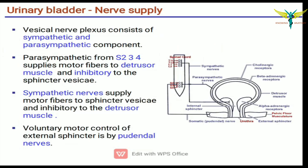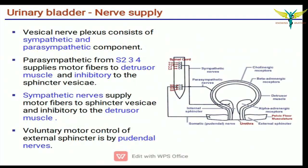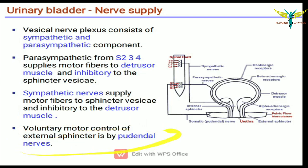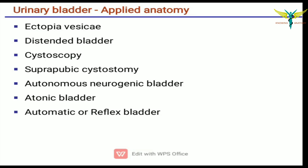Coming to the nerve supply: it is by the vesical nerve plexus, which consists of sympathetic and parasympathetic components. The parasympathetic component is from S2, S3, and S4, supplying motor fibers to the detrusor muscle and inhibitory fibers to the sphincter vesicae. The sympathetic nerve supplies motor fibers to the sphincter of the urinary bladder.